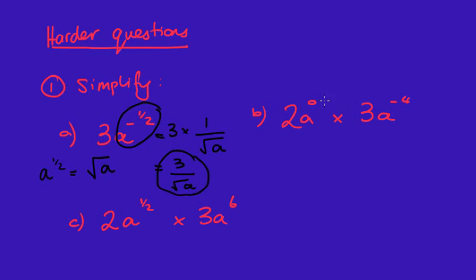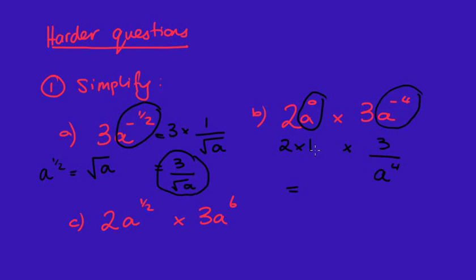Question b: the power of zero is only working on the a, so I've got 2 times 1, which is 2. Then I multiply by 3a to the negative 4 — the negative 4 is only working on the a — so I've got 3 over a to the power of 4. Simplified: 2 times 3 is 6 over a to the power of 4.